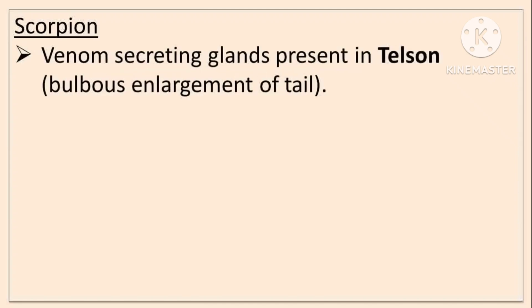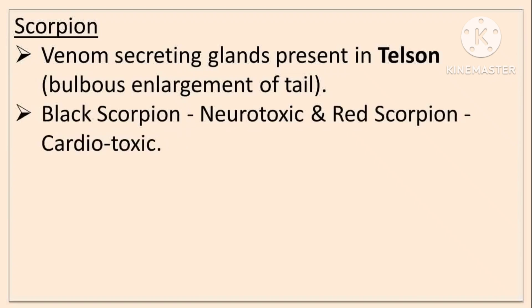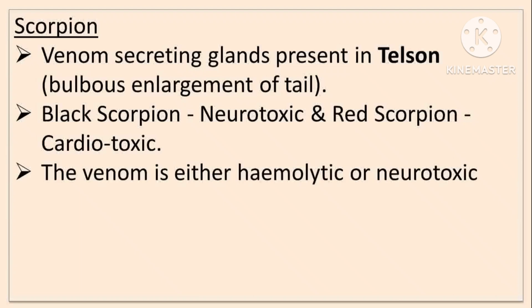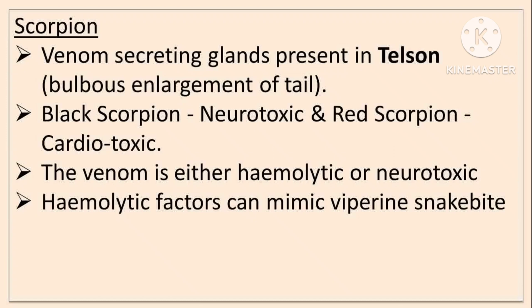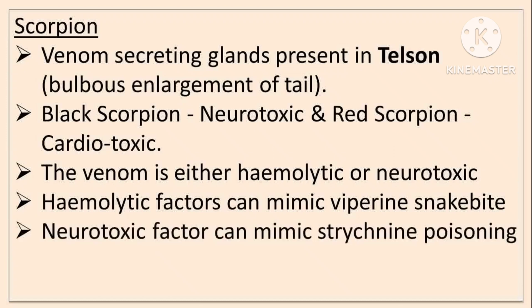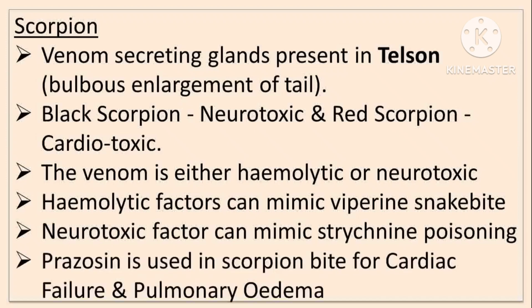In scorpions, venom-secreting glands are present in the telson, the bulbous enlargement of the tail. There are two types: black scorpion, which is mainly neurotoxic, and red scorpion, which is cardiotoxic. The venom is either hemolytic or neurotoxic. Hemolytic factors can mimic Viper snake bite, and neurotoxic factors can mimic strychnine poisoning. Prazosin is used in scorpion bite for cardiac failure and pulmonary edema.